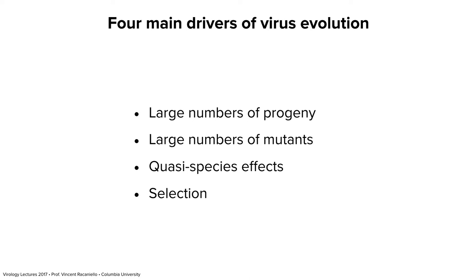We're going to look at four main drivers of viral evolution today in detail: first, making a lot of progeny; second, making a lot of mutants; third, something called the quasi-species effect; and finally, how we select from all this diversity the new phenotypes that we see.